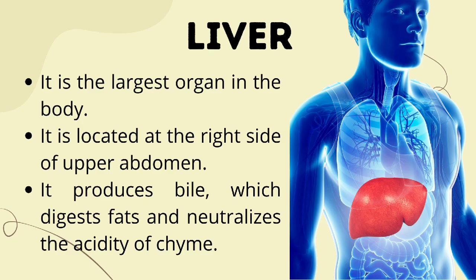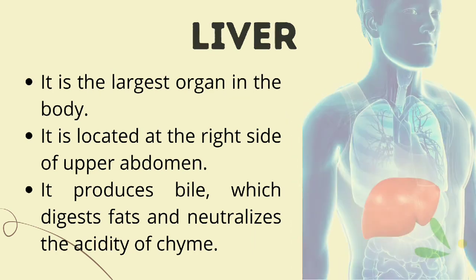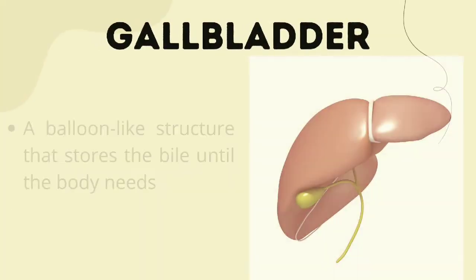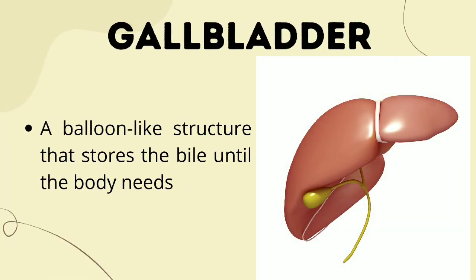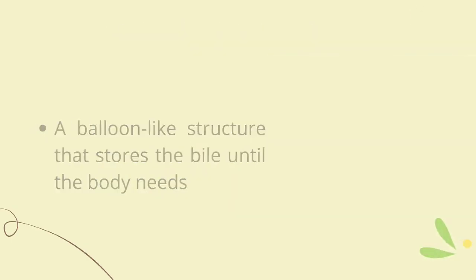The liver also digests fats, which is important for our body. Next is the gallbladder — it is a balloon-like structure that stores the bile until the body needs it. When the liver produces bile, it is stored in the gallbladder, which then releases the bile when the body needs it.